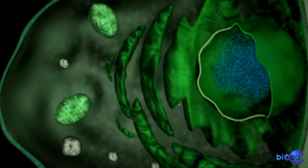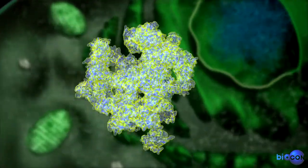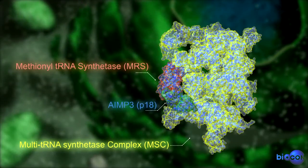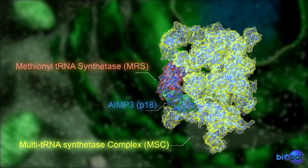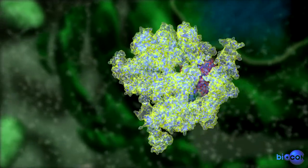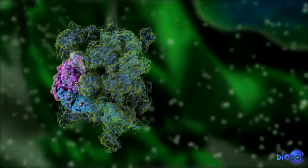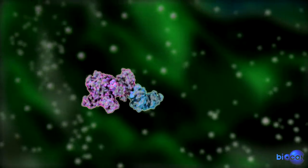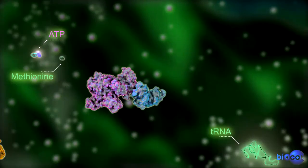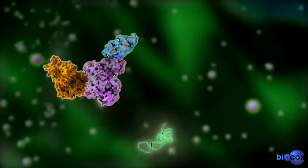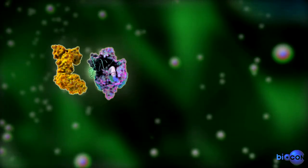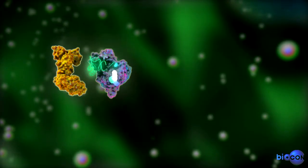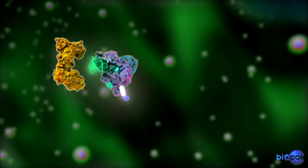MRS is a member of the multi-tRNA synthetase complex (MSC), and is normally conjugated with AIMP3, which is a potential tumor suppressor that is translocated to the nucleus to repair damaged DNA.